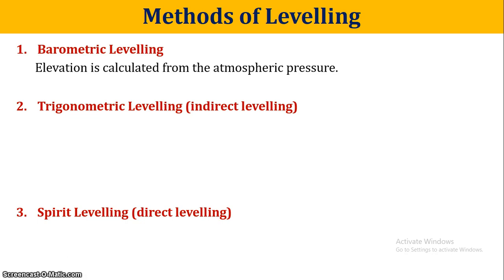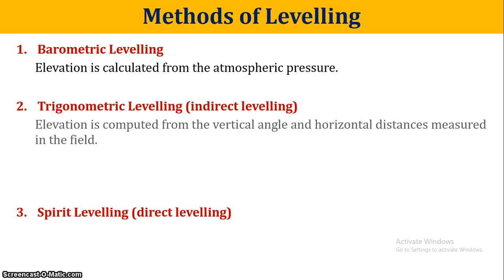The next method is trigonometric leveling, which is indirect leveling. Using trigonometric relations — specifically vertical angles and horizontal distances — we can calculate elevation. That is trigonometric leveling.